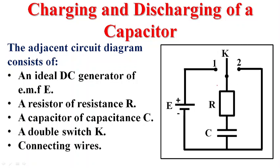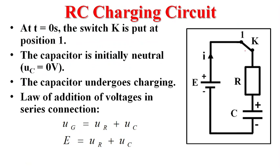First of all, in order to charge this capacitor, the capacitor is initially neutral. If we need to charge this capacitor, we put K at position one, and you connect this capacitor to this battery in order to charge it. At t equals zero, the switch is put at one, we get this circuit. This circuit is called an RC circuit.